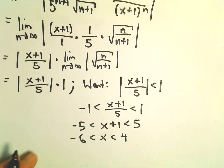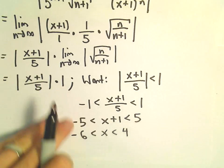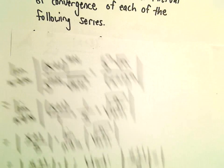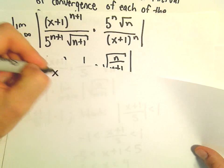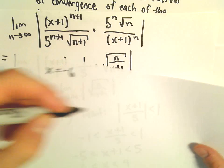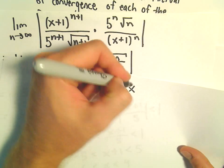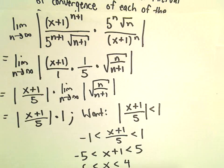So now we just have to go back and check the endpoints individually — x equals negative 6 and x equals positive 4.